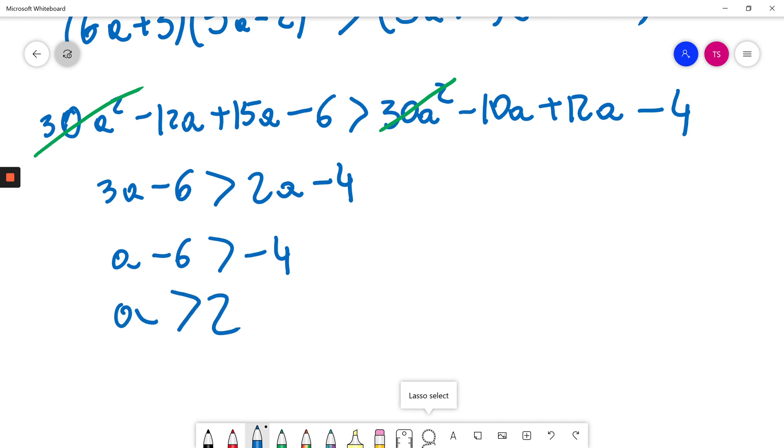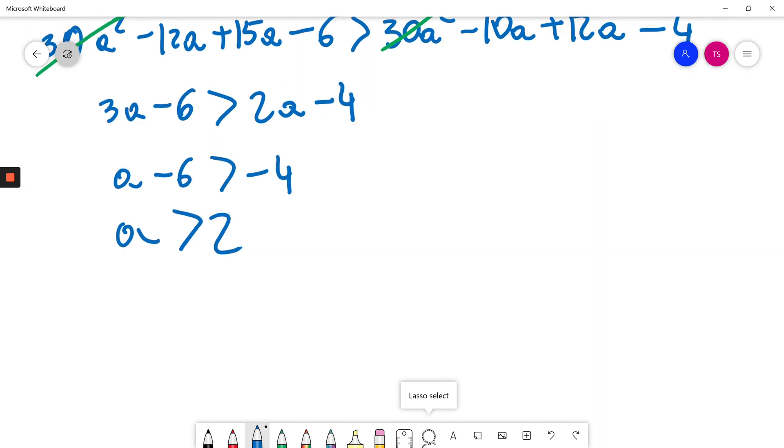So I know now for A more than 2, 5A-2 divided by 5A plus 2 is more than 6A minus 2 divided by 6A plus 3.